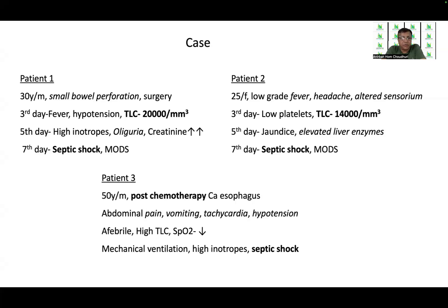Our third patient is a 50-year-old male post-chemotherapy following CA esophagus who presents with abdominal pain, vomiting, tachycardia with hypotension. But the patient is notably afebrile, the counts are high, the TLC is high, the saturation drops. The patient requires mechanical ventilation on high inotropes and also proceeds to septic shock. So we can see that these three patients are all progressing to septic shock with multi-organ dysfunction within the same time frame through separate courses, and the presentations are varying from one case to another with change in the biochemical parameters, which is quite different and distinct.